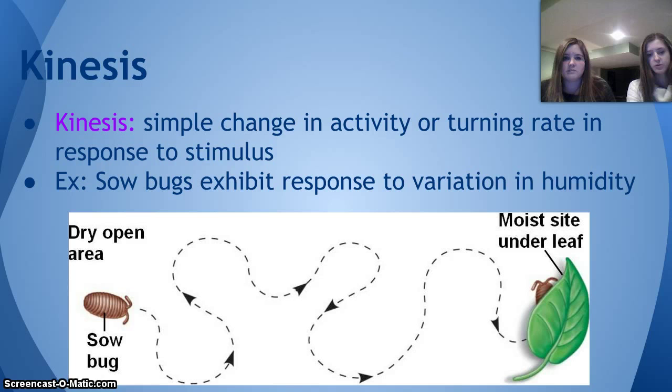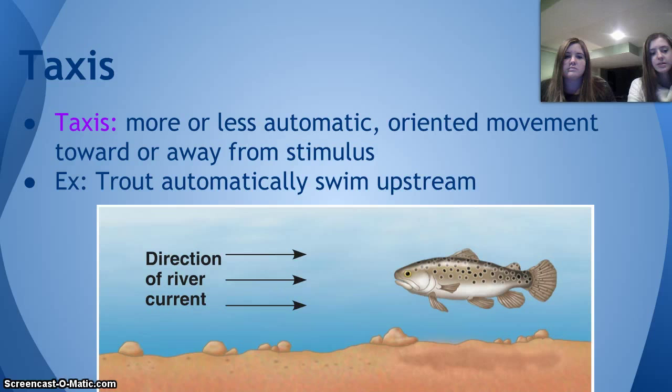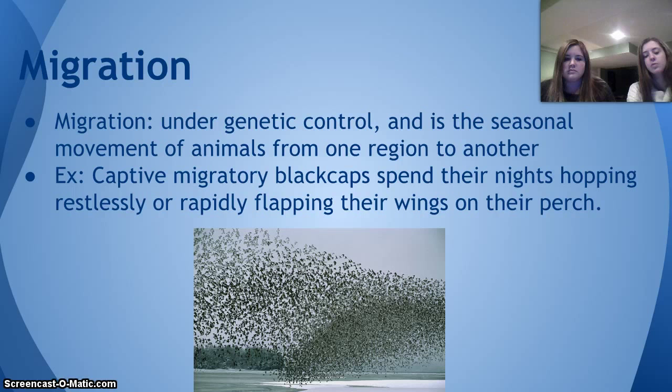Another type is taxis, which is a more or less automatic and oriented movement toward or away from a stimulus. For example, trout will automatically swim upstream, in the opposite direction of the current, which is their stimulus. There's also migration, which is under genetic control and is the seasonal movement of animals from one region to another. For example, captive migratory blackcaps in a cage will spend their nights hopping restlessly or rapidly flapping their wings on their perch, trying to escape in order to migrate because they have an ingrained drive to migrate at a certain time.